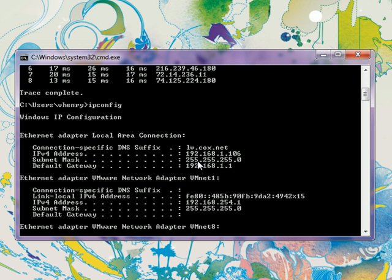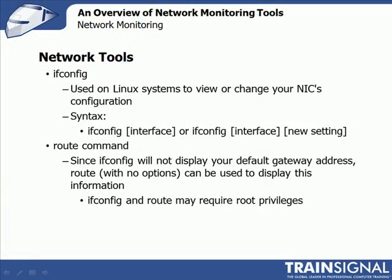Let's go back to the presentation and take a look at the Linux version of this tool. ifconfig is the Linux equivalent of ipconfig, and it's used to view or change your network interface card configuration information. The syntax is ifconfig by itself, ifconfig followed by the interface, or ifconfig followed by the interface and the new setting if you want to make a change. One difference: the Linux version will not display your default gateway address, so you can use the route command with no options to display that information.